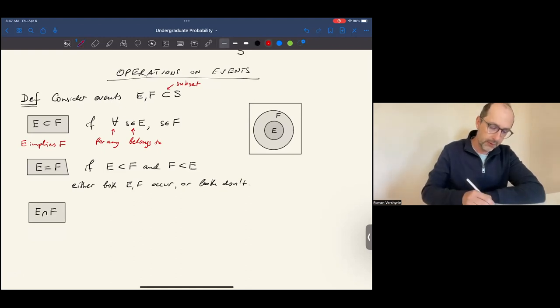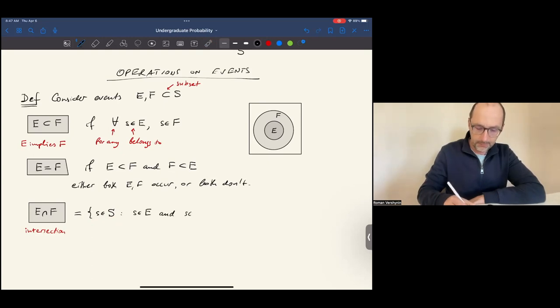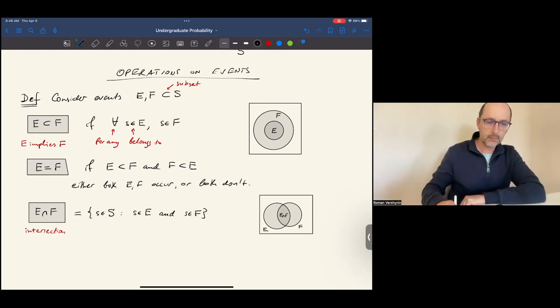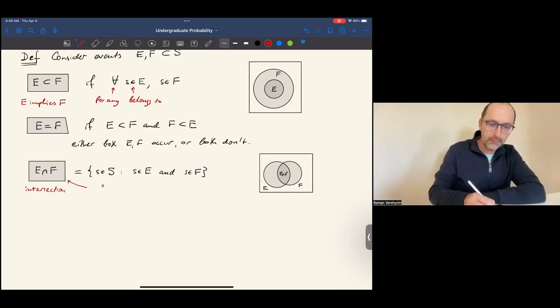The intersection of the two events E and F is the set of all outcomes S from the sample space that belong to both E and F. We can visualize the intersection as the common part of the two sets. This is E, this is F, and this is the intersection. E intersection F stands for E and F occur at the same time.